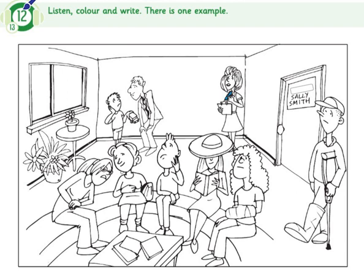Now you listen and colour and write. One. What shall I colour now? You can colour the flower in front of the window. There are three flowers. Which flowers shall I colour? The smallest one on the table. Colour the smallest flower pink.